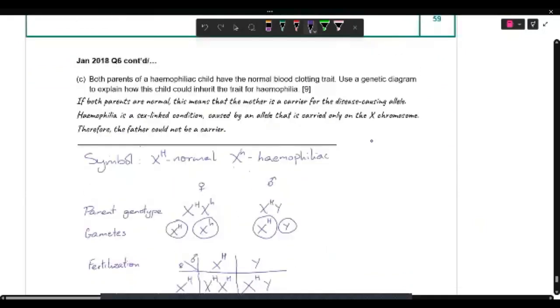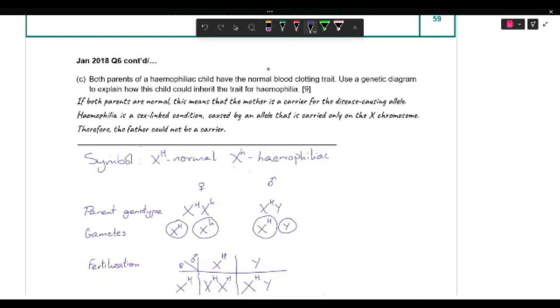And last part of question six. We have some genetics to play around with. So we have a hemophiliac child. Both of that child's parents have the normal blood clotting traits. So when you look at their phenotype, they're both normal. Their blood clots normally. So the question will be, well, how come they end up with a child that's hemophilia?